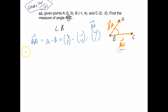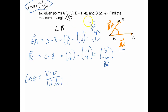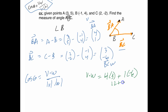Now find vector BC: tip minus tail, C minus B, so (2, negative 2) minus (negative 1, 4). That gives 3 and negative 2 minus 4 which is negative 6, so BC is (3, negative 6). Now use the formula: cosine theta equals v dot w over magnitude of v times magnitude of w. The dot product is 4 times 3 plus 1 times negative 6, giving 12 plus negative 6, which is 6.